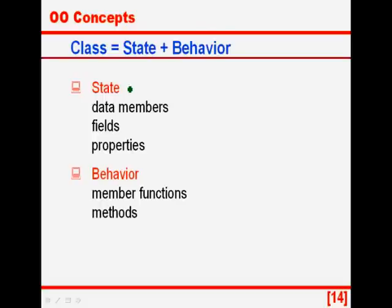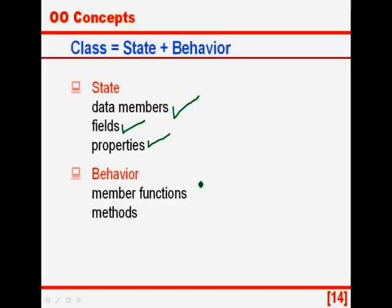Looking further at the class equals state plus behavior equation: the state is often referred to as data members. We are talking about C++ programs; in other languages like Java they are known as fields, and Visual Basic programmers like to call them properties — these are just different jargon used in different programming languages. Similarly, the behavior is defined by what are known as methods in Java. C++ programmers like to call them member functions. Do remember that these are one and the same.